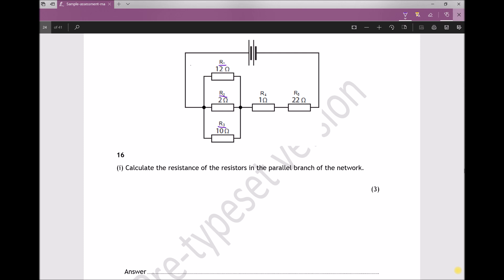To calculate the total equivalent resistance of those three resistors we can use the formula: 1 over RT is 1 over R1 plus 1 over R2 plus 1 over R3.